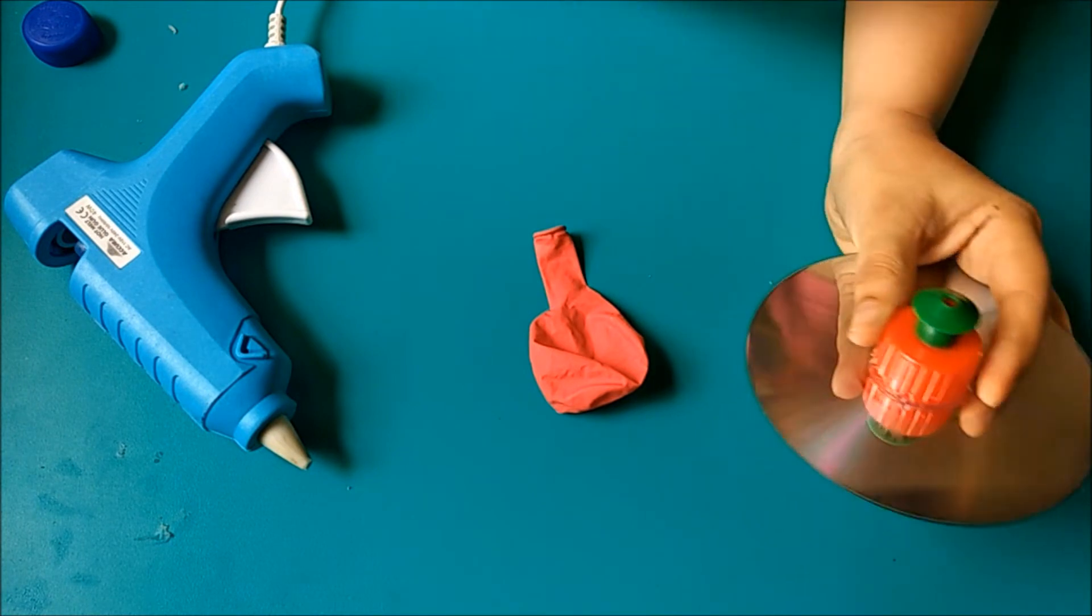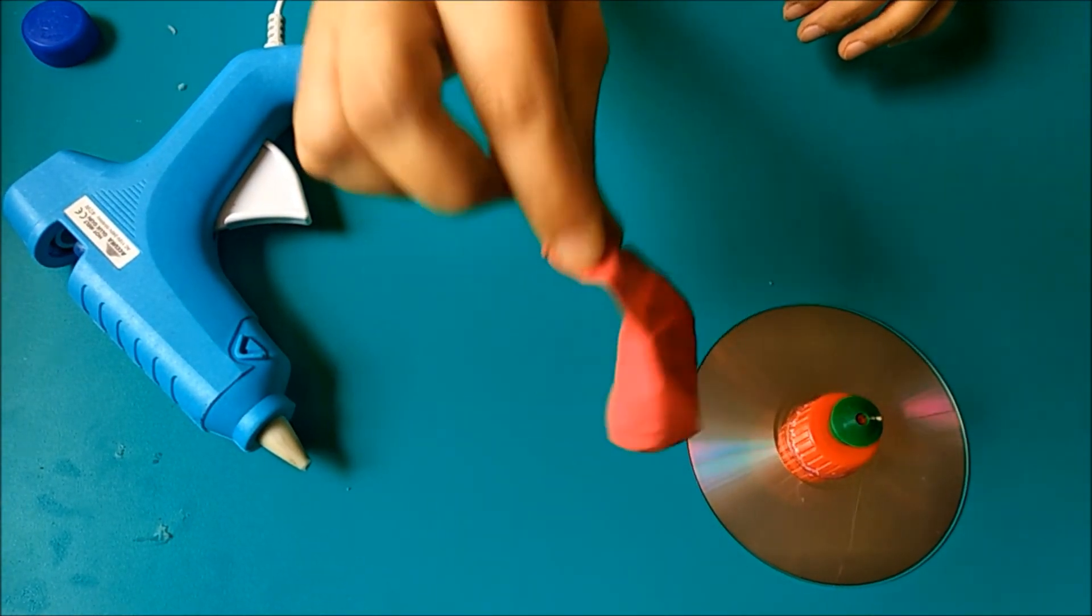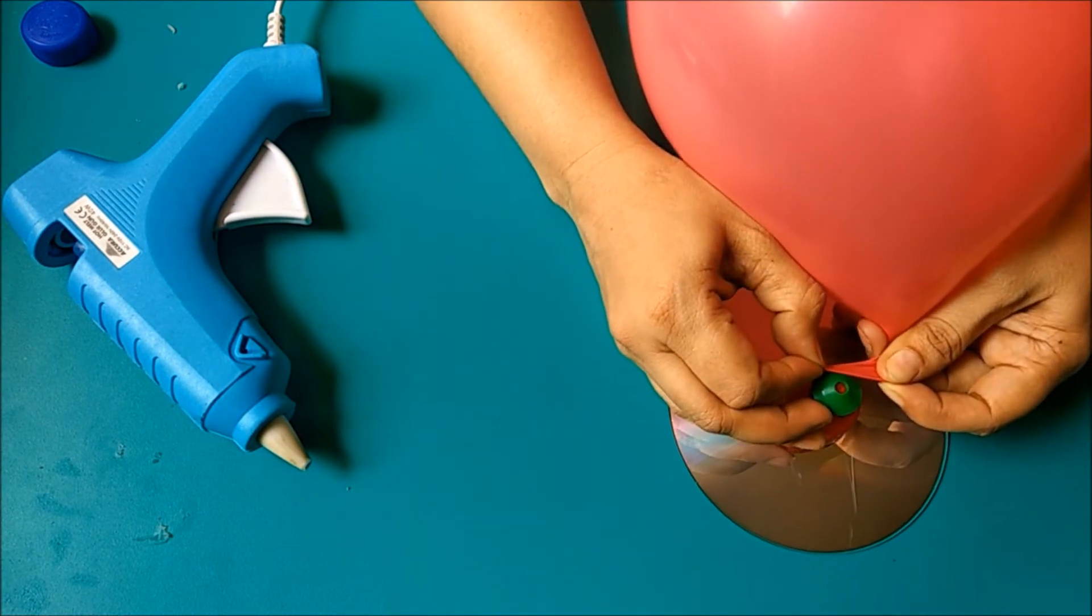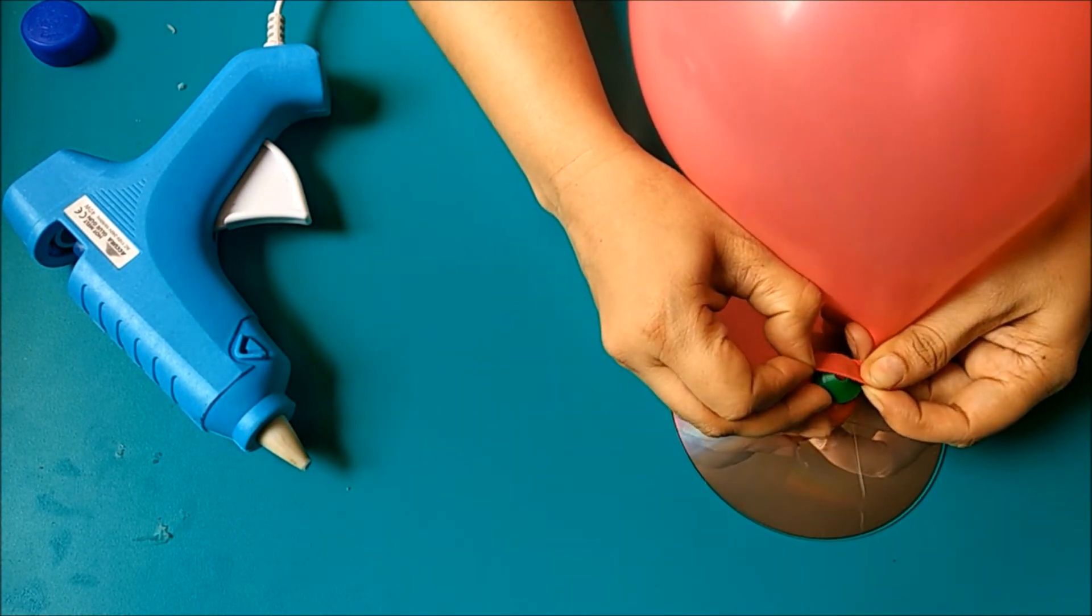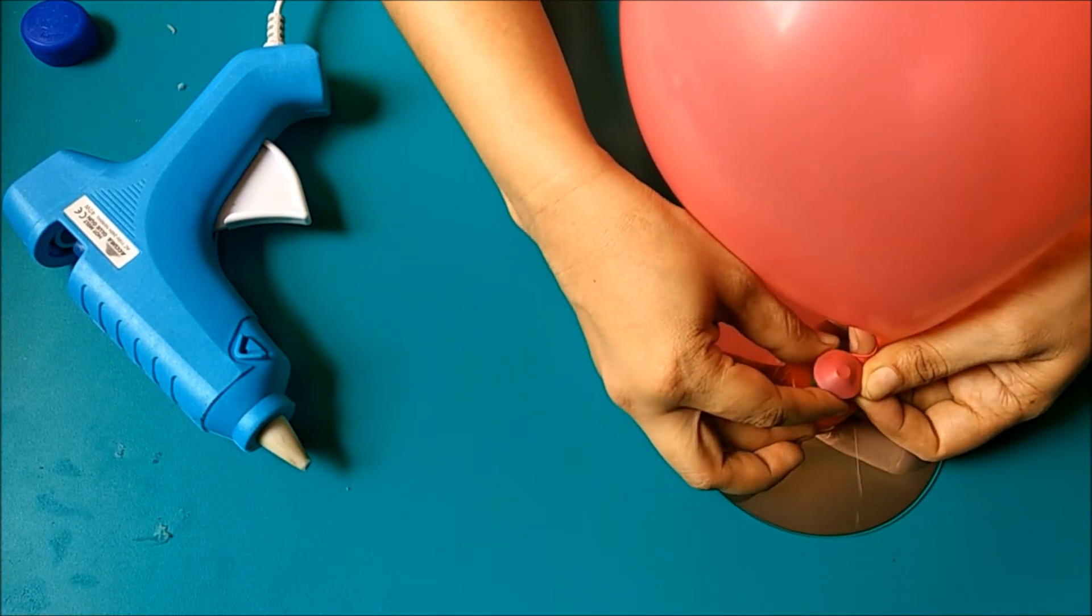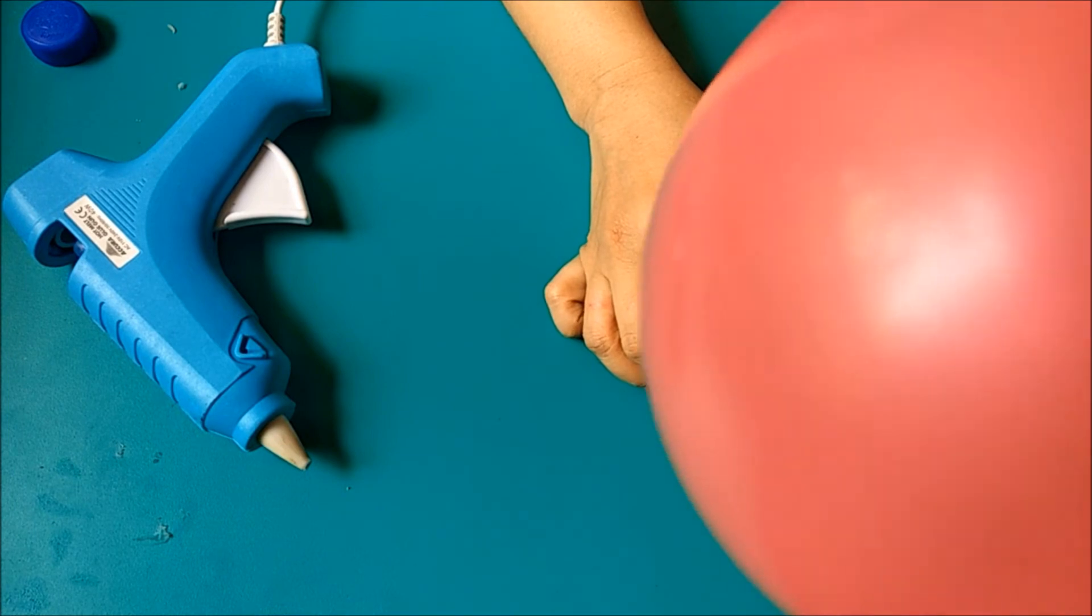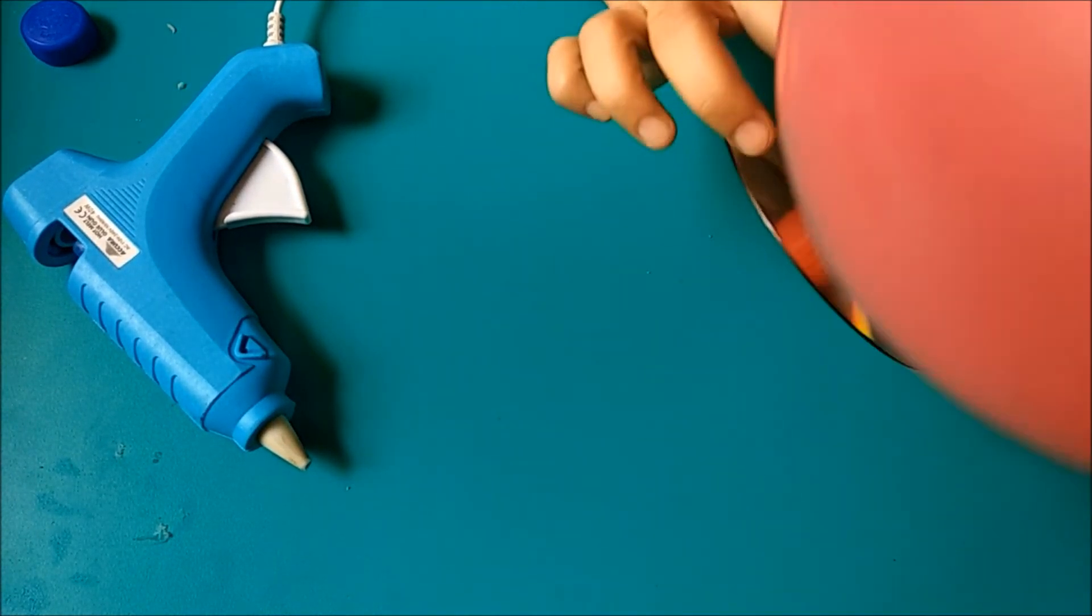So I am closing this lock. After that, blow up the balloon and stretch the mouth of the balloon over the bottle cap. Now adjust the balloon straight. See, now our cap is closed.